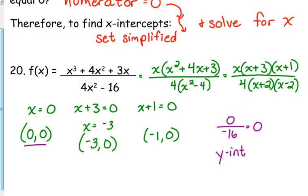So, guess what, if you get (0, 0) as an x-intercept, that means that's your y-intercept too. Okay, because at the origin, you're crossing both axes.